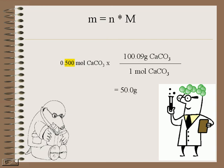Since there are three significant digits in 0.500 and five significant digits in 100.09, we round off our answer to three significant digits.